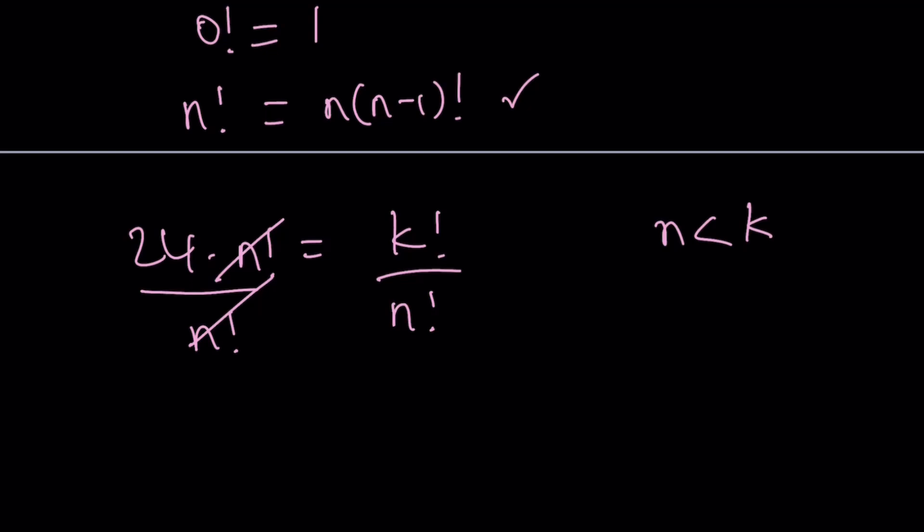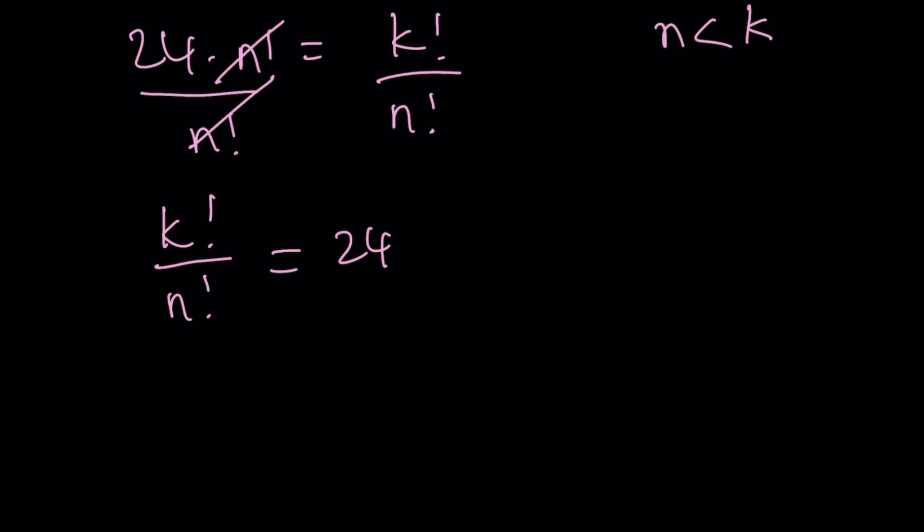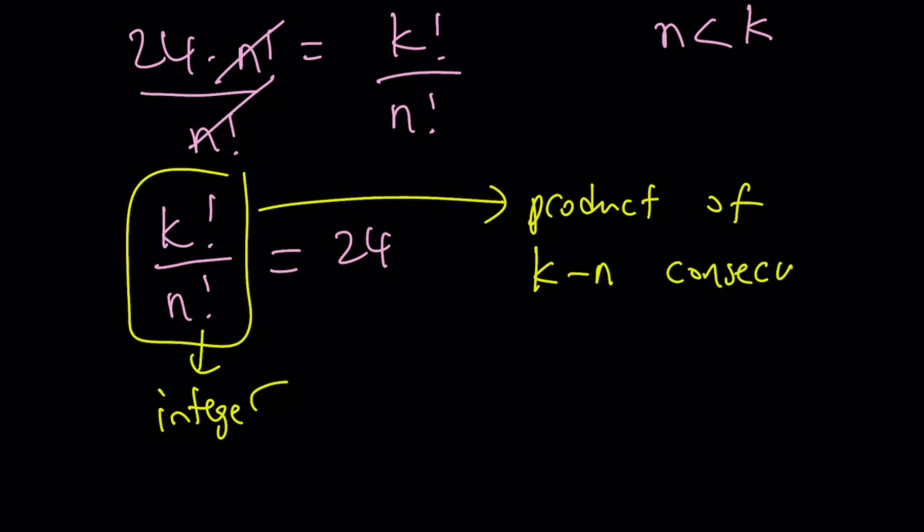Since k factorial over n factorial is 24, then k factorial over n factorial is an integer. But what kind of integer is that? Well, k is greater, so we have a bunch of numbers k through 1, the product, and then we have n through 1. And n through 1 cancels out from k. For example, 6, 5, 4 is the product of three consecutive integers.